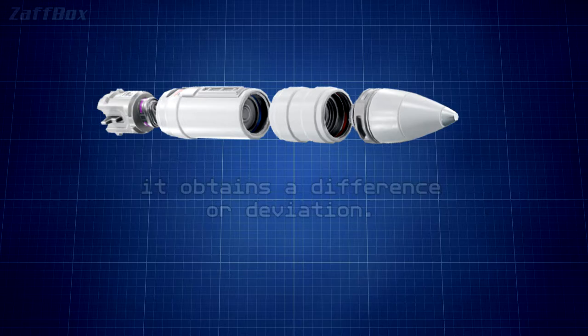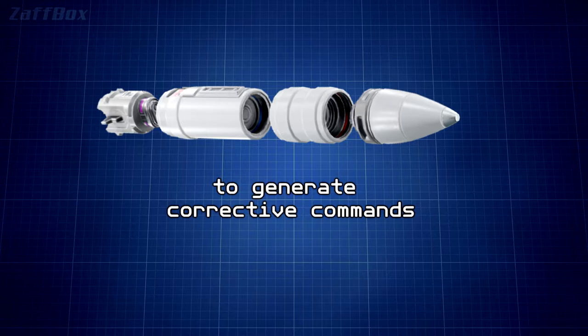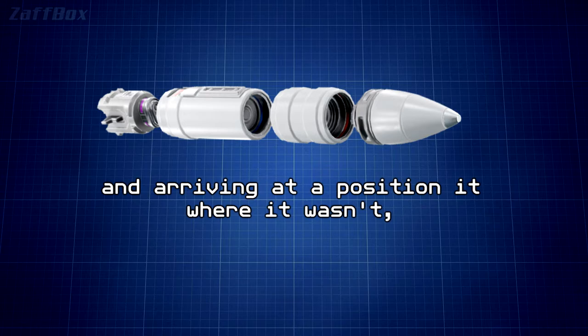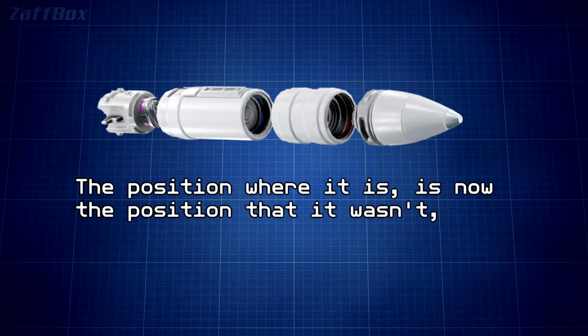a difference, or deviation. The guidance subsystem uses deviations to generate corrective commands to drive the missile from a position where it is to a position where it isn't. And arriving at a position where it wasn't, it now is.